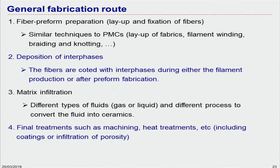The general fabrication procedure for CMCs has four main stages. First, we produce the preforms — preform preparation, similar to polymer matrix composites where we may have prepregs. Second is deposition of the interfaces, which is an extra step not found in PMCs, because of the weak interface concept. We apply an interface coating on the fiber surfaces to promote fiber pullout. Third is matrix infiltration, depositing matrix materials on top of the reinforcement.